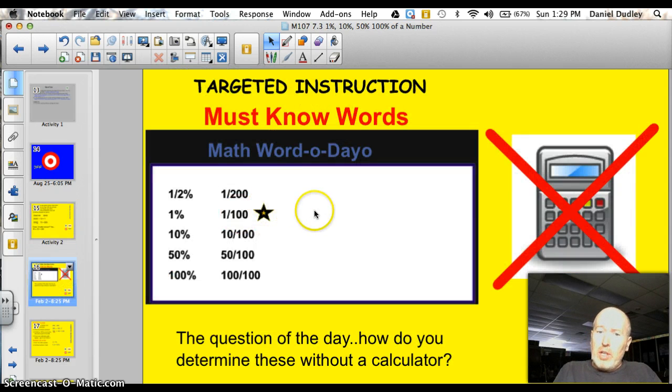Well, tonight, we need to be looking at these targets. Figuring out what 0.5% is, which is like 1 out of 200, or 1%, which is always 1 one-hundredth. So, 10% which is 10 one-hundredths, 50% which is 50 one-hundredths, and of course 100%, which is 100 one-hundredths. The question of the day is, how do you determine these without a calculator?